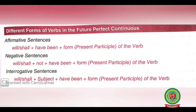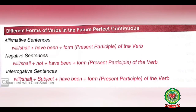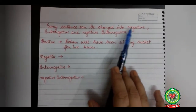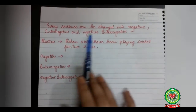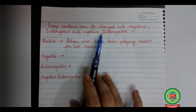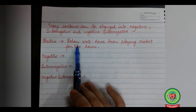To make it interrogative, we bring our helping verb outside to the beginning of the sentence, and it will be: will/shall plus subject plus have been plus V1 plus ing — that is, the present participle form of the verb. Students, every sentence can be changed into negative, interrogative, and negative interrogative.